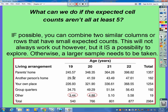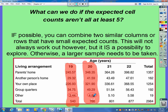So if you look, we definitely have over five, over five, over five — but we got a couple here that aren't over five. What could you do? You could treat both of these ages as one age. You could say this is the 19-20 year old group, and you could add these two together. And then that would be 8.22, which would be over five at that point. And then you haven't violated the large sample size condition.